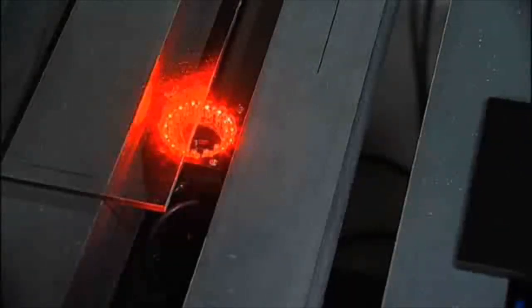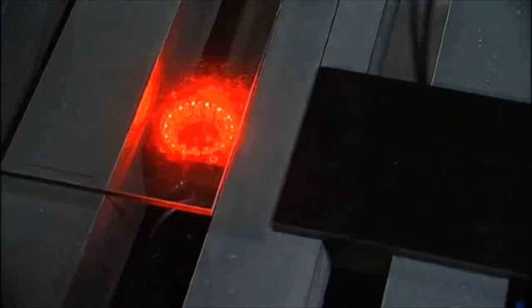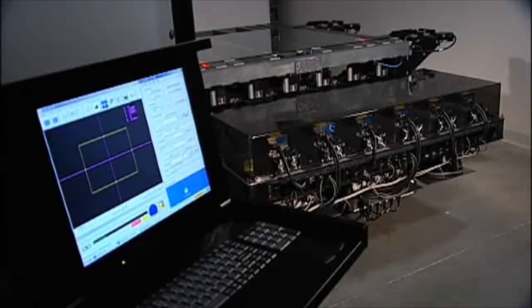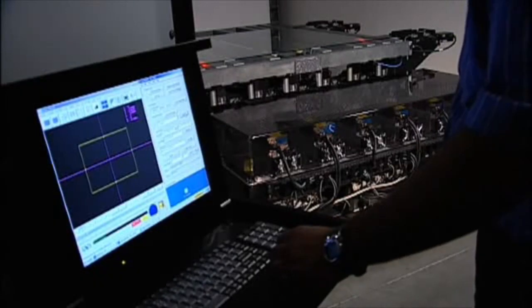Once the panel is loaded onto the air grid, edge-grip stages laterally secure the panel, which is now ready for registration. A machine vision system detects features on the glass which are used for alignment.